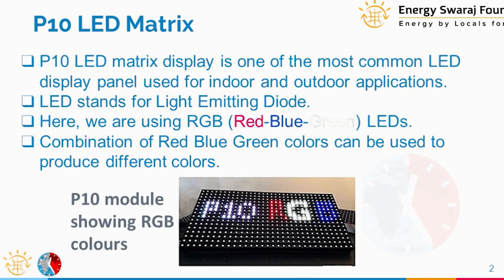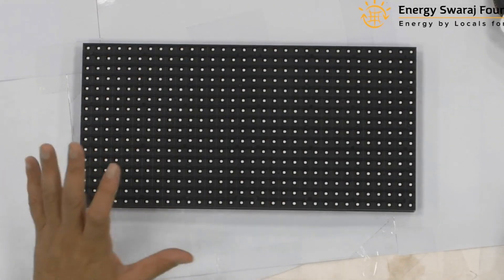The one we are going to use in our climate clock assembly is a multiple color display called RGB — red, green, and blue. So all kinds of color combinations are available. We will discuss what 'P10' means in the next slide.